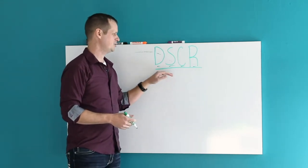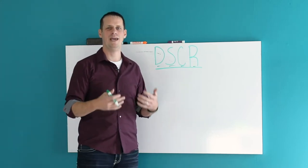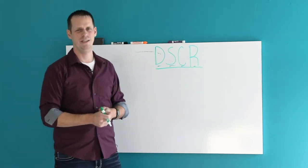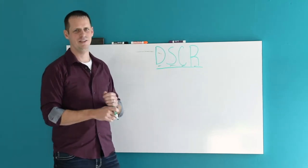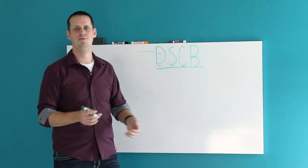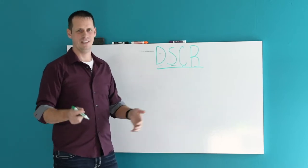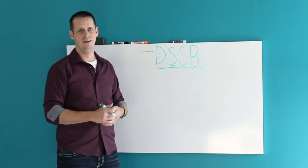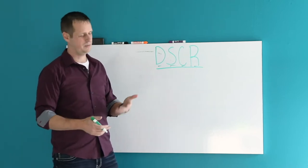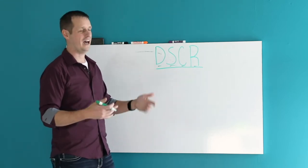This is a measurement of how much money is available to be able to pay the debt on a property. As you can tell, we're talking about debt and the debt service. Who's going to want to know this number? First off, it should be important to you, but a bank is also going to want to see this number. They'll probably be impressed.